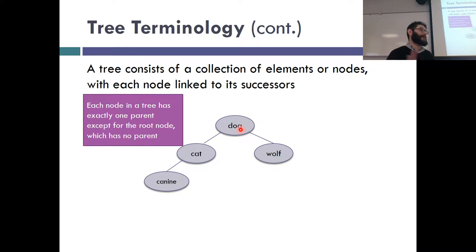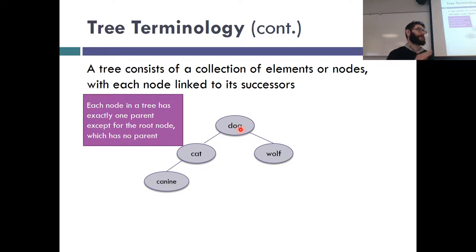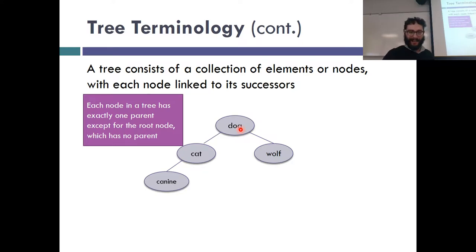After grandparent it gets a bit silly, so you might just want to use 'ancestor' and 'descendant' at that point, rather than counting the number of 'greats.' Also try to avoid using terms like 'first cousin once removed' — while some people know what those mean, not everybody does.